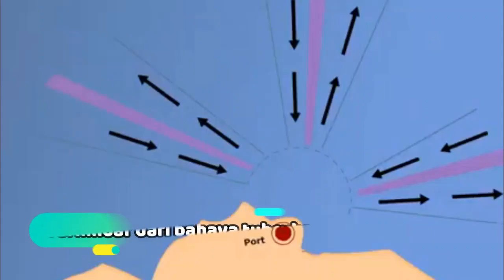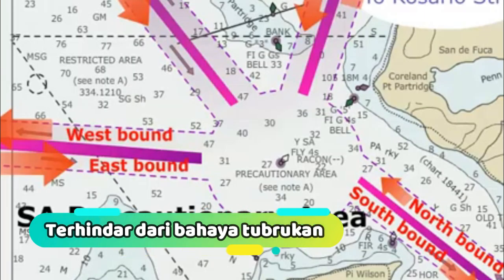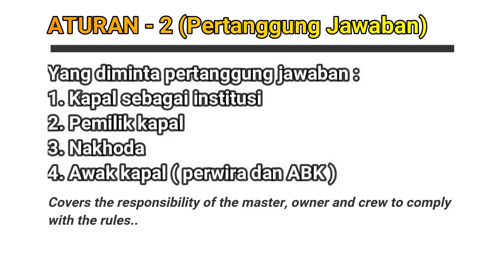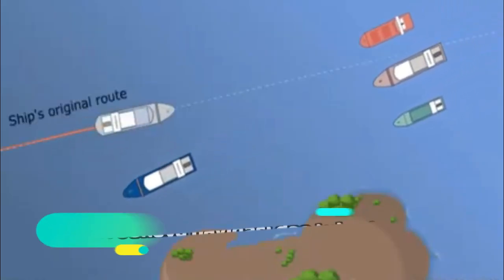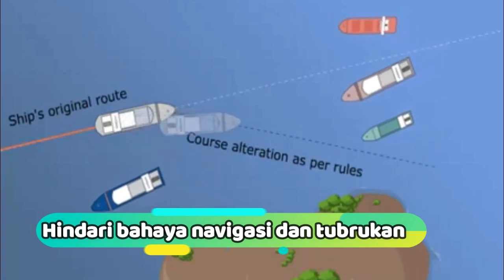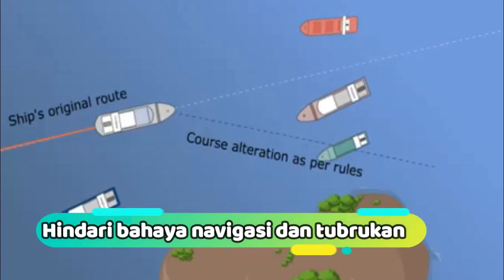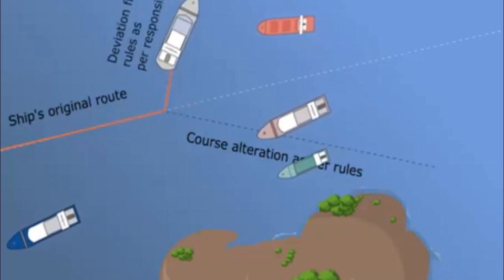The traffic separation schemes will be for the purpose of enhancing the effectiveness of these collision regulations. At certain times or circumstances, it may not be possible to strictly follow the rules. A seaman may have to deviate from the rules if he thinks that any action taken by following the rules in a special situation shall endanger the ship. In that case, deviation from the rule may be permitted to avoid danger.